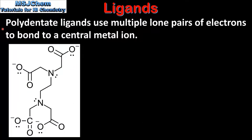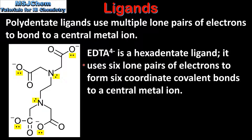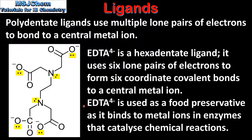To end the video we look at polydentate ligands, which use multiple lone pairs of electrons to bond to a central metal ion. On the left we can see the structure of the EDTA4- ion, which is a hexadentate ligand. It uses six lone pairs of electrons to form six coordinate covalent bonds to a central metal ion. When bonded to a central metal ion it has an octahedral geometry with a coordination number of six. EDTA4- is used as a food preservative as it binds to metal ions in enzymes that catalyze chemical reactions.